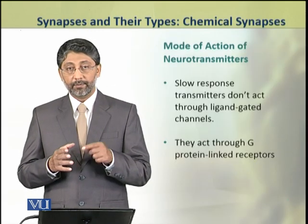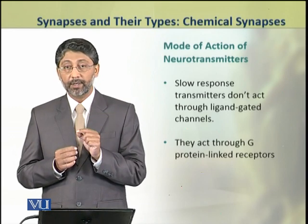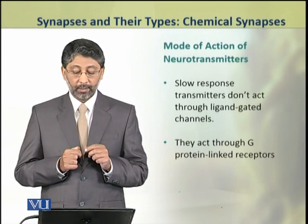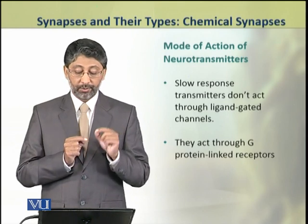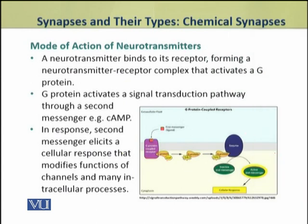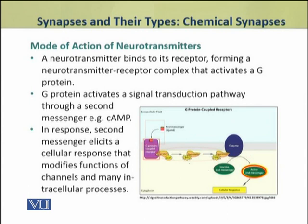Now we shall discuss the mechanism of action of neurotransmitters involved in slow chemical transmission. The slow response transmitters do not act through ligand-gated channels, but through G-protein linked receptors. A neurotransmitter binds to its receptor, forming a neurotransmitter-receptor complex that activates a G-protein. The G-protein activates a signal transduction pathway involving a second messenger, for example cyclic AMP. In response, the second messenger elicits a cellular response that modifies the functions of channels and many intracellular processes.